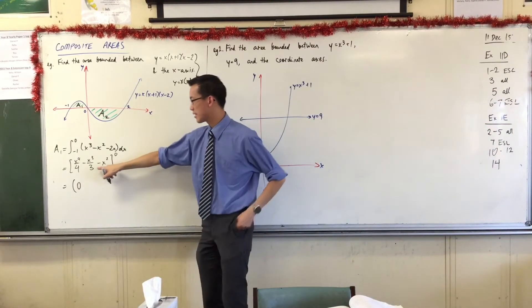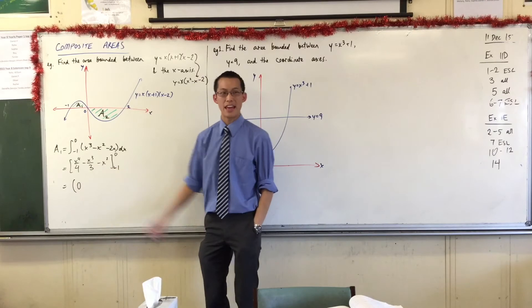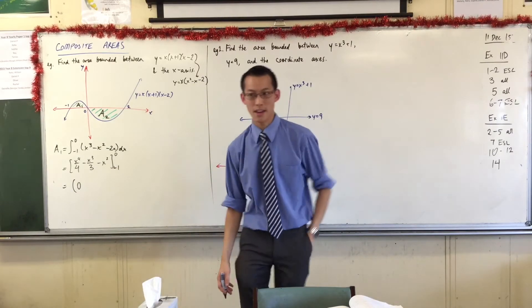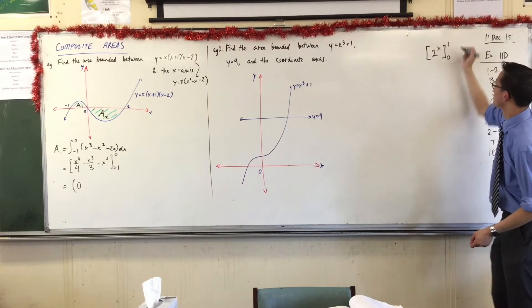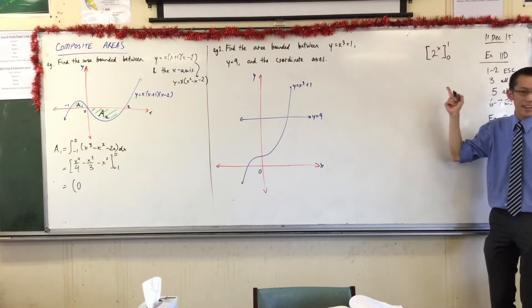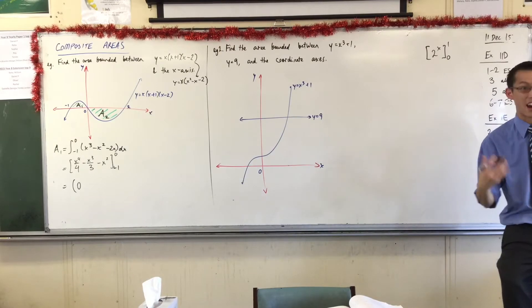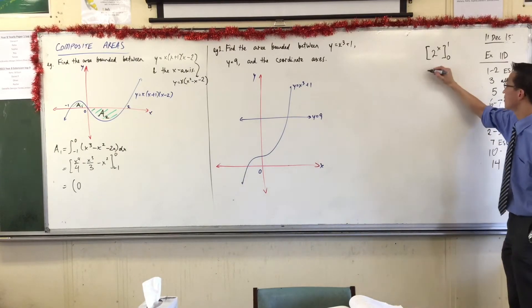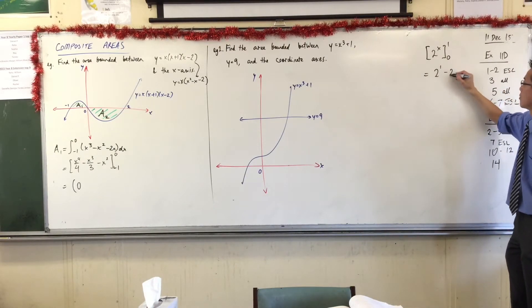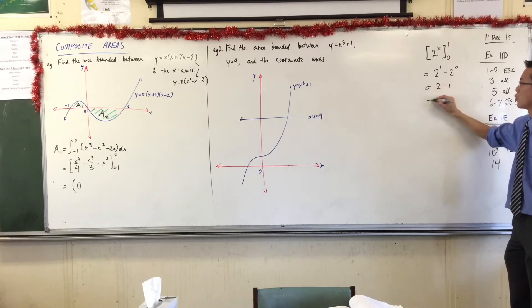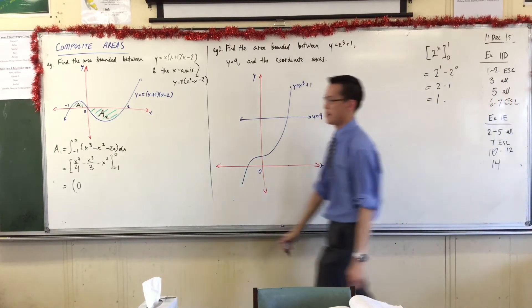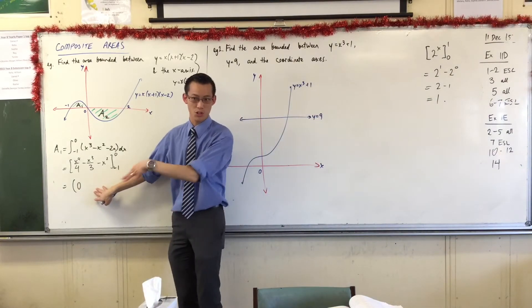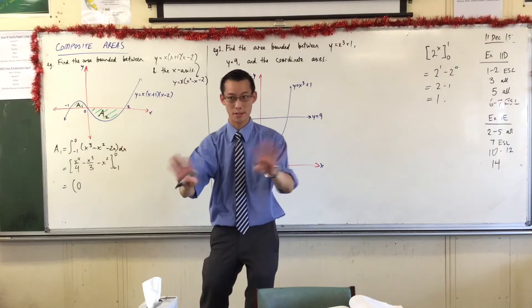But please don't neglect to write that 0 down. It's a classic, classic error to just say it doesn't matter, I'll evaluate it at 0, it just disappears. In many cases it does, but it doesn't always. For example, when we get to things like this, which have a primitive function that has, say, an exponential in it. If I was evaluating this, you can see here the 0 is not trivial at all. It's kind of important, actually, because this is going to be 2 to the 1 minus 2 to the 0, which is 2 minus 1. That 0 really matters.